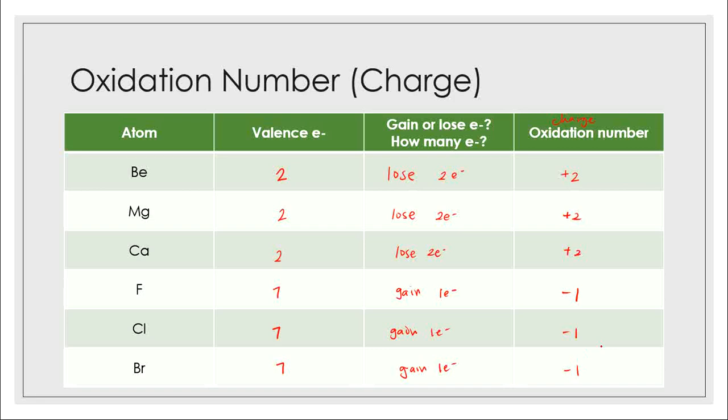Now, what's the pattern here? If elements are in the same group and have the same number of valence electrons, they're going to do the same thing — they're going to have the same oxidation number.